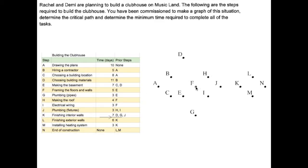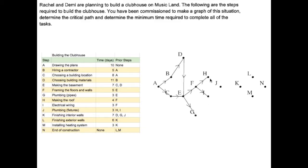H has F as a prerequisite, so F goes to H. I has F as a prerequisite, so F goes to I as well. J has H and I as prerequisites, so H and I both go to J. K has D, G, and J as prerequisites — that's why I put D so high up, to get a straight line to K. J goes to K and G goes to K. L has K as a prerequisite. M also has K as a prerequisite. N has L and M as prerequisites. Drawing the arrows: A goes to B and A goes to C. B goes to D. C goes to E. D goes to E. E goes to F and G. F goes to H and I. H goes to J and I goes to J. J goes to K. D goes to K as well. G also goes to K. K goes to L and M. L goes to N and M goes to N.